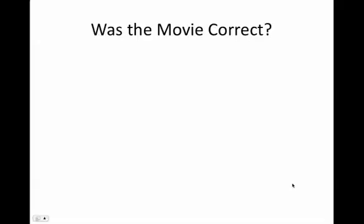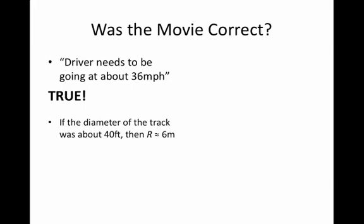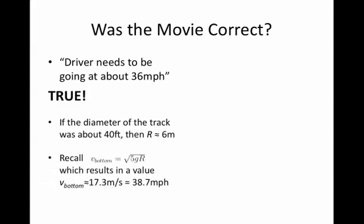The movie cites some values that I want to check just to make sure that we did our math correctly too. The movie cites the driver needs to be going at about 36 miles per hour at the bottom of the loop in order to make it all the way around the top using conservation of energy. Well this is actually about right. If the diameter of the track was approximately 40 feet then this translates to a radius of curvature of about 6 meters. And if you recall that we derived that the velocity at the bottom of the loop had to equal √5gR, if we use 6 meters for R then this results in a velocity at the bottom of about 17.3 meters per second or about 39 miles per hour.